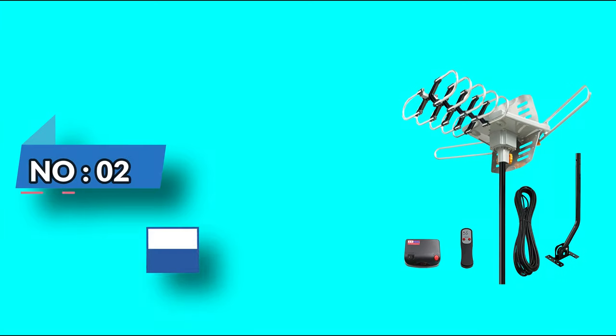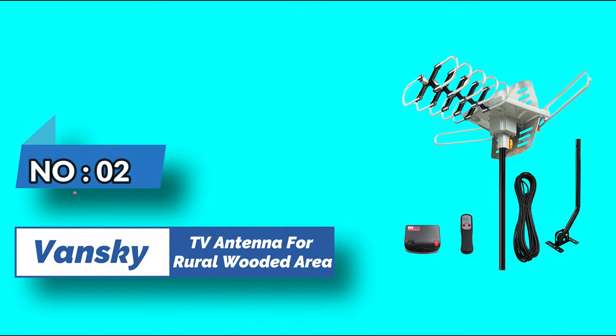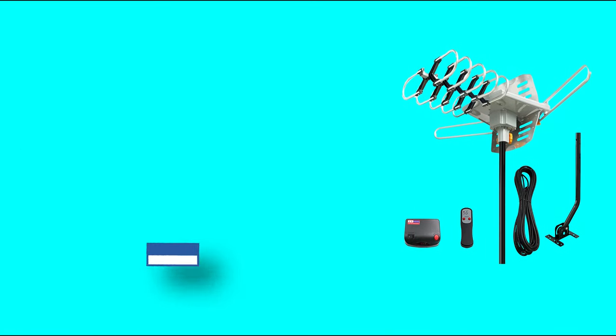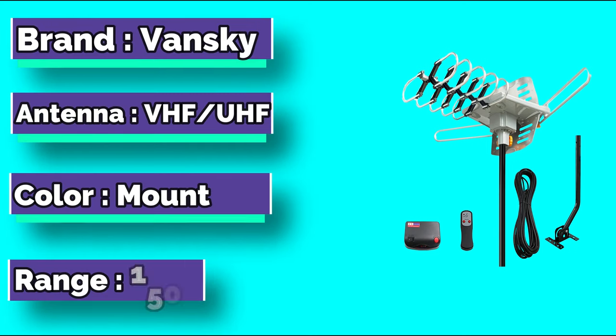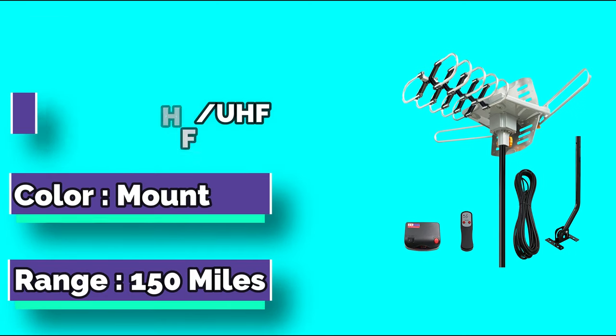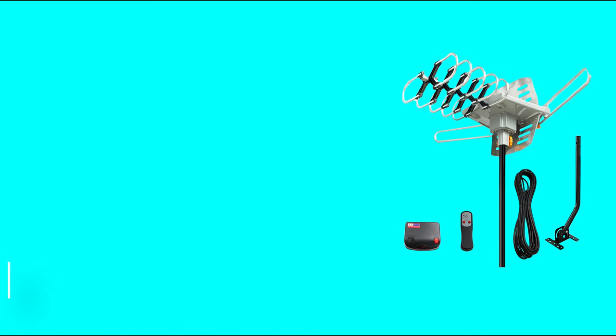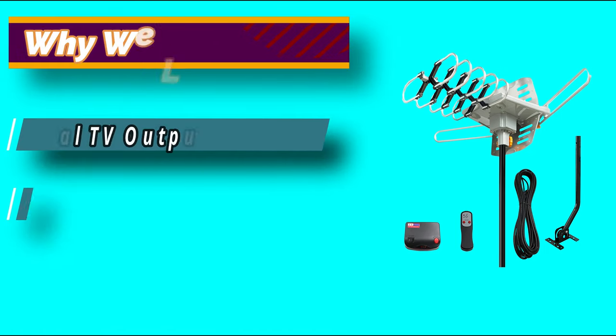Number 2: Vansky TV Antenna for Rural Wooded Area. Vansky has been topping our list more, and with its prowess, it can perform great even in covered woody areas. Moreover, the motor rotor can turn this antenna 360 degrees.